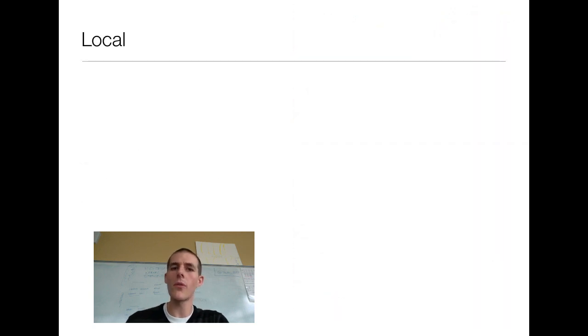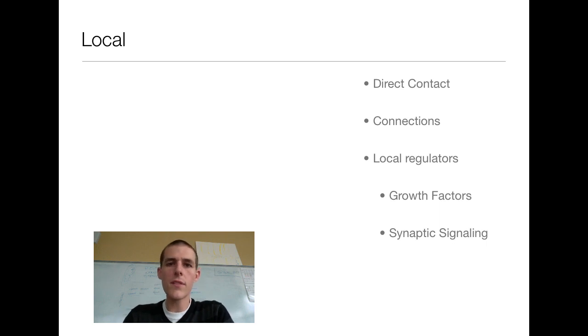All right, let's talk about local versus long distance. Things you need to know about local signaling. There's a couple different ways that this can occur. Sometimes there's just direct contact. Two cells are touching each other. They're able to cause a change within each other. And that would be a direct contact signal. Sometimes there are connections. So in some cases, especially the plant cells, they've got little tunnels between the cells that actually allow cytoplasm to pass between the cells. If cytoplasm can pass between the cells, then signals, chemical signals, can also pass between the cells. And then, like we had talked about previously, there are local regulators.